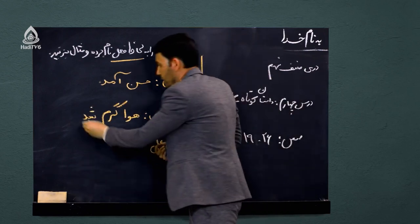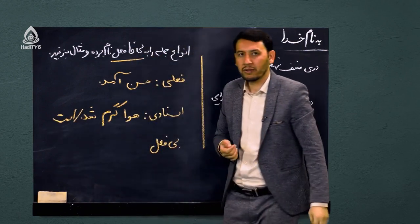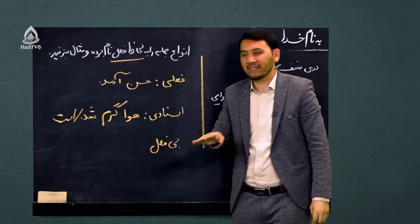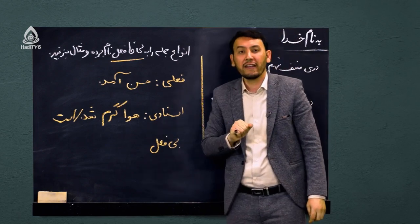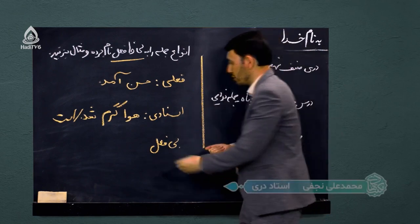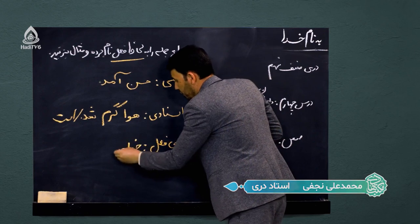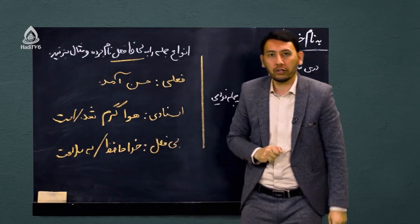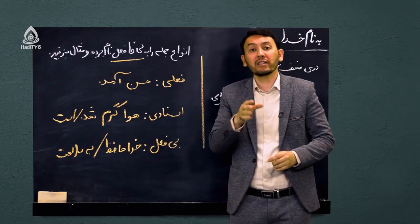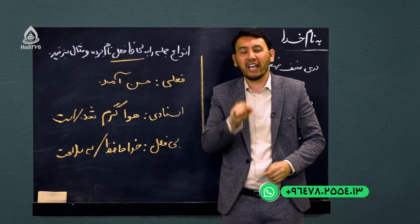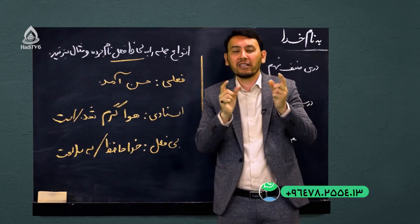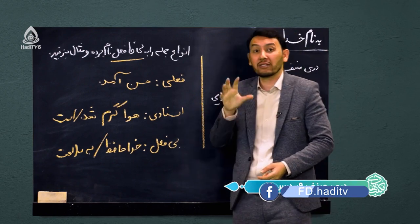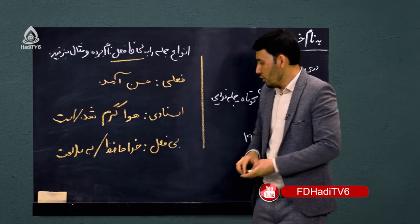مثلاً می‌گویم «هوا گرم شد» یا «هوا گرم است» — این می‌شود یک جمله اسنادی. نوع سوم ما دوستان جملاتی هستند که نه فعل دارند نه اسنادی هستند، یعنی جملاتی که فاقد فعلند. جملات بی‌فعل می‌توانند چه باشند؟ گفتیم: «خداحافظ»، «به سلامت»، «دو دوتا چار»، «توقف ممنوع». این جملات فعل ندارند ولی معنای کامل را می‌رسانند، چون ویژگی اصلی جمله رساندن معنا به طور کامل است.